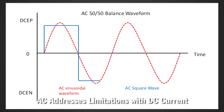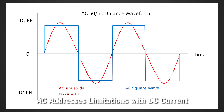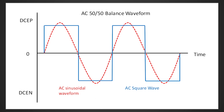AC is alternating current, which means crossing zero from electrode positive to electrode negative. The slope when crossing zero is steepened to stabilize the arc. This is known as square wave technology.